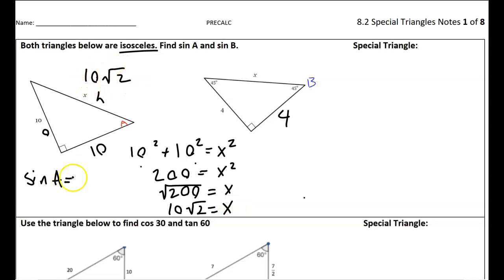And then sine of A is going to be my opposite over my hypotenuse. And notice what happens here. 10 over 10 cancels out, and I get 1 over the square root 2. We're just going to leave it like that for now, although notice I could rationalize.